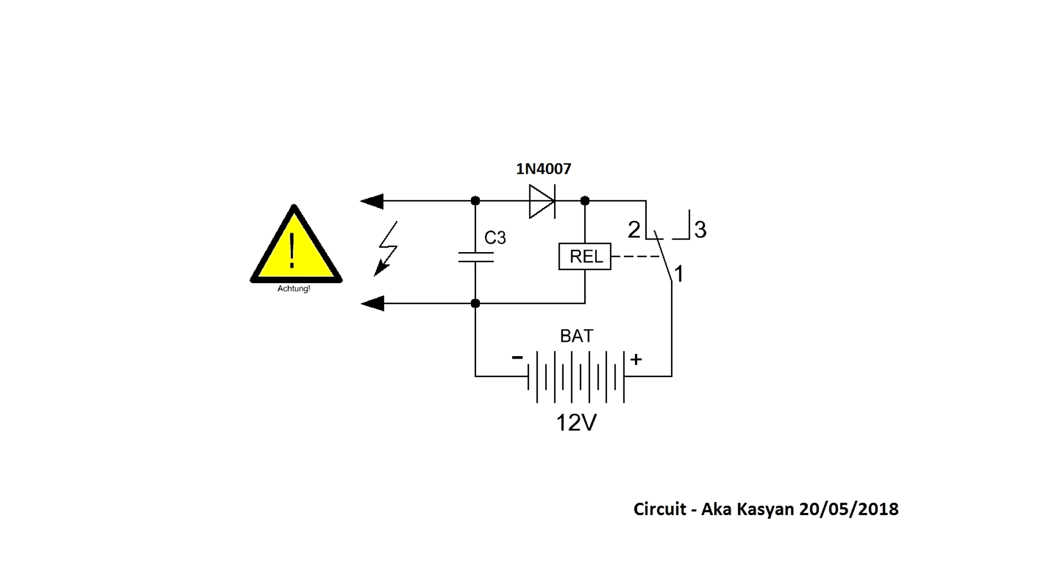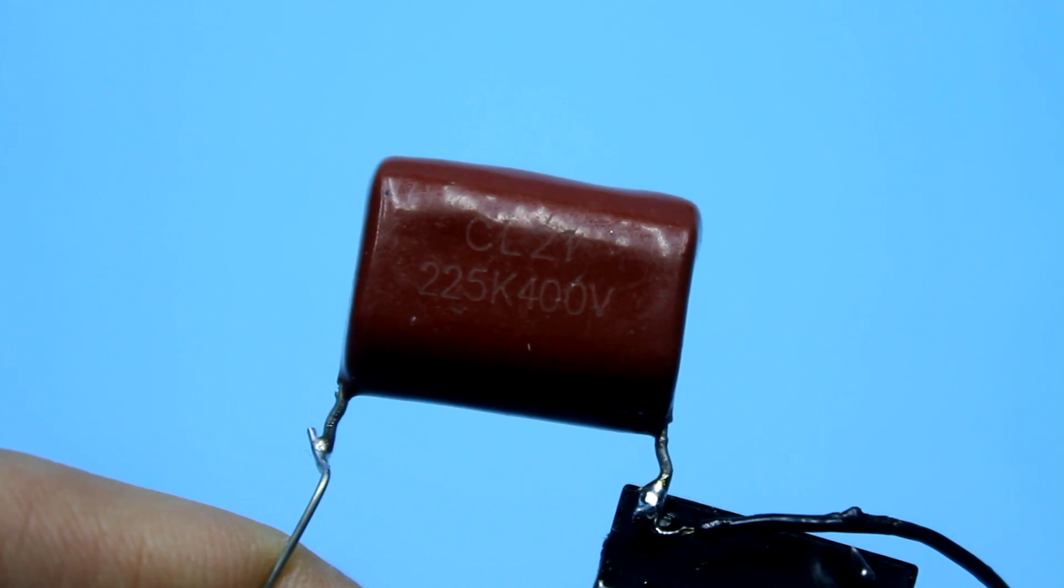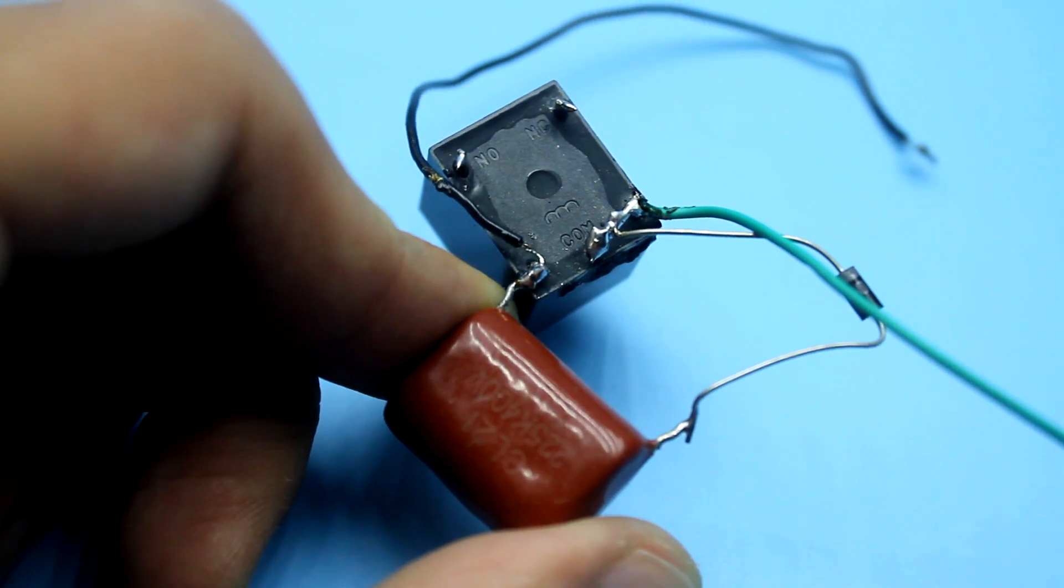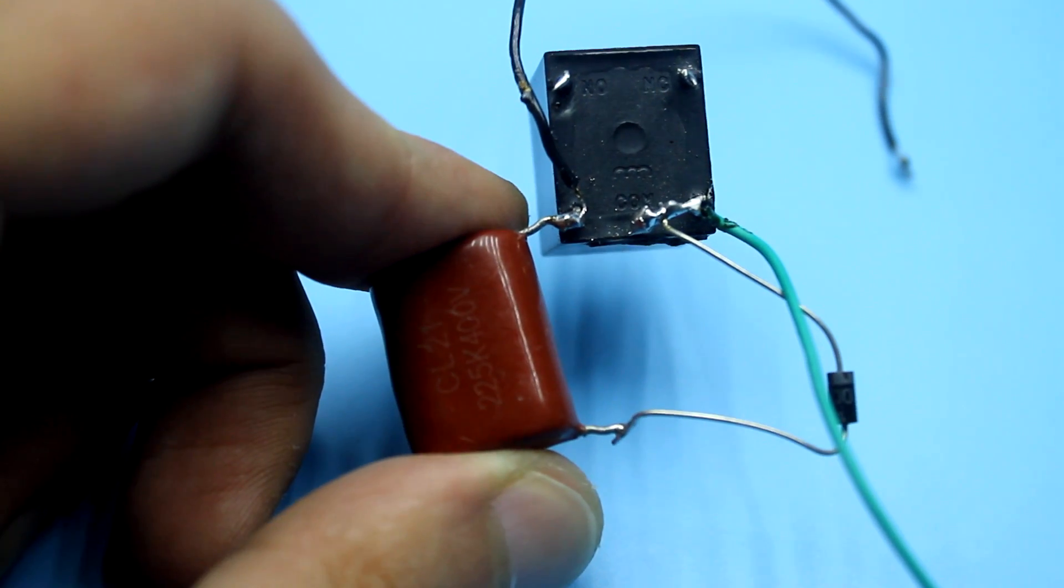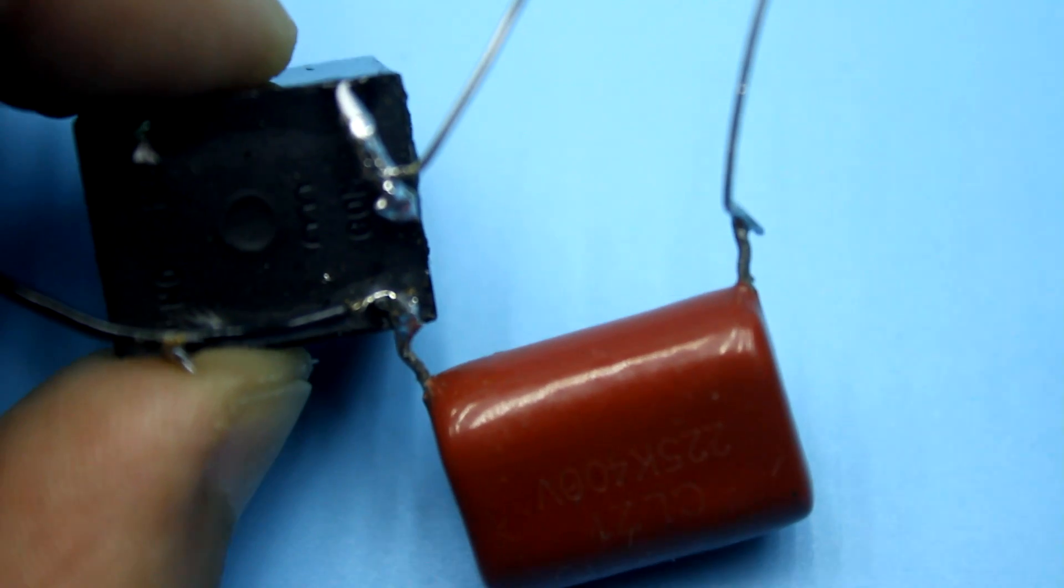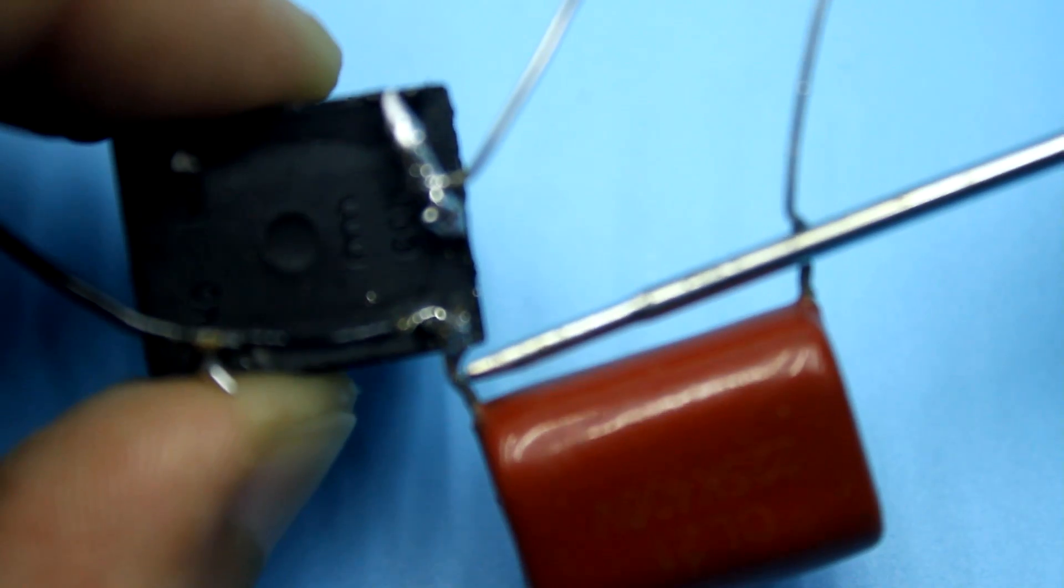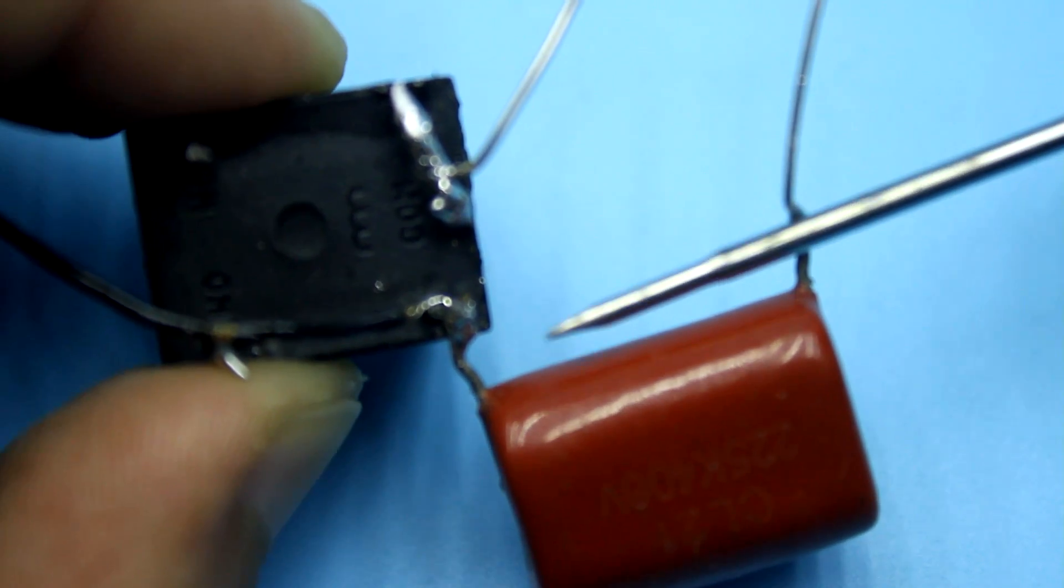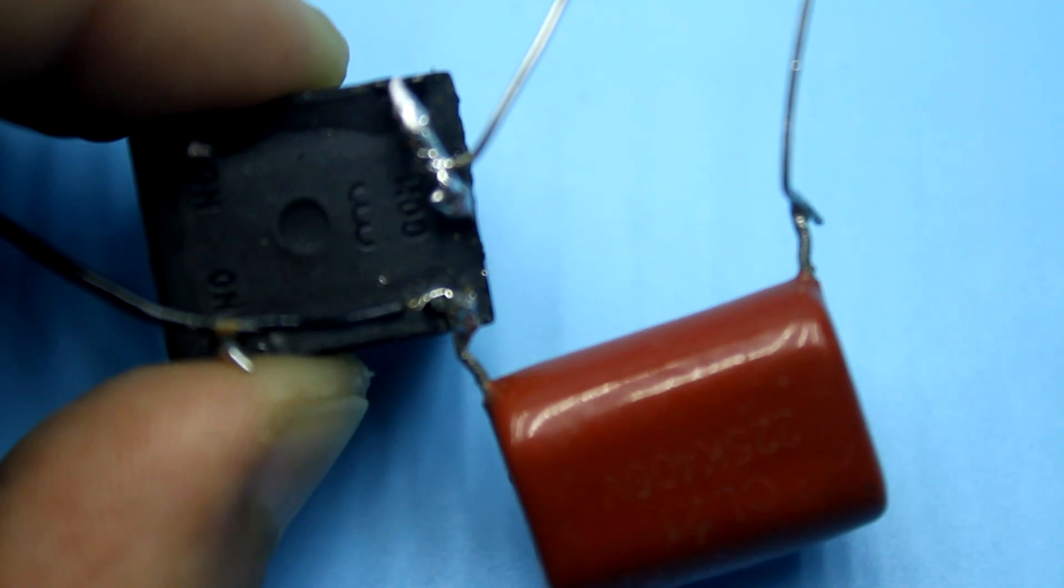Everything is simple here. The breaker provides periodic power supply to the solenoid. After the power is turned off, the self-induction voltage through the rectifier accumulates in the capacitor. The capacitor must be rated for 250 or 400 volts. Due to its small capacity, the circuit operates a few seconds. It's enough to charge the capacitor.